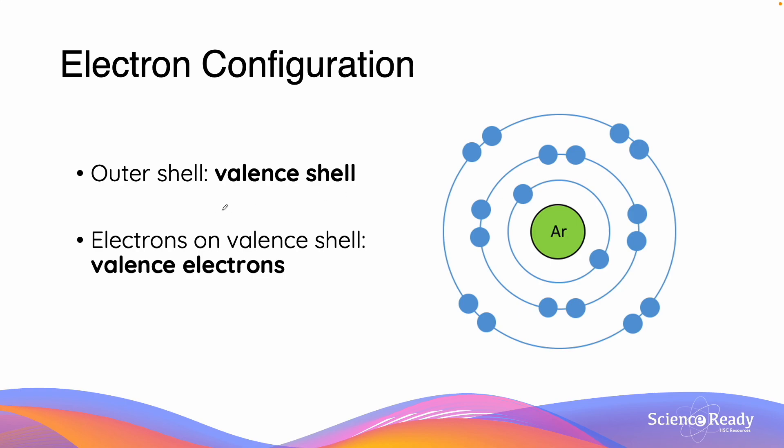Here is an important term that we will have to learn. The outer shell of an atom is called the valence shell, and the electrons which are on the valence shell are called the valence electrons.